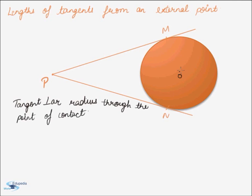Therefore, if we join O with M and N and get the corresponding radii, then by this theorem, OM will be perpendicular to PM, and ON will be perpendicular to PN.